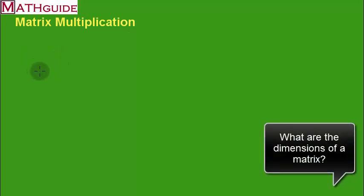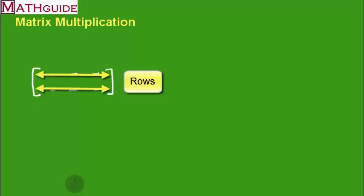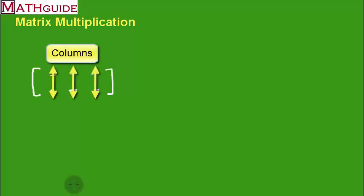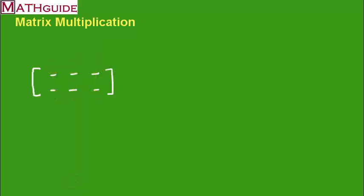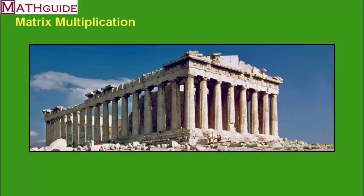The first thing we have to consider for matrix multiplication is dimension. So what are the dimensions of a matrix? Imagine that the dashes in this matrix represent values — those are all numbers. What you need to know is the difference between rows and columns. Rows go horizontally — there are two rows here. Columns are vertical — there are three columns. A helpful memory trick: think of those ancient Greek architectural columns holding up buildings. Columns are always vertical.